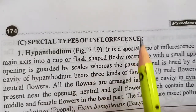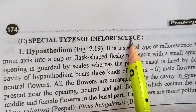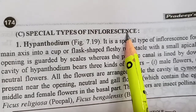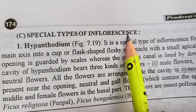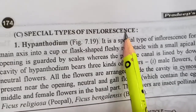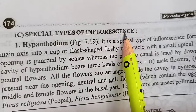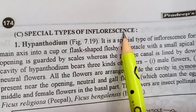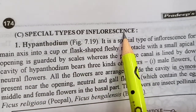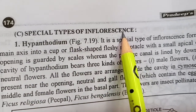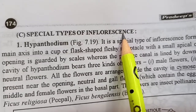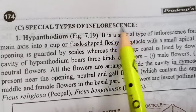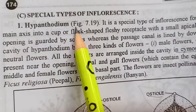Special types of inflorescence mein 3 tarah ki inflorescence hoti hai, which is hypanthodium, cyathium, and verticilaster. So let's start with hypanthodium.